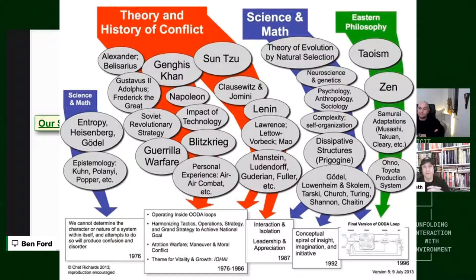We can also see on the right here where the final version of Boyd's drawing of the OODA loop — which is also my background on the slides — appears, and we can see that this took a long time. When was Boyd doing his big briefings to generals? That was all in the late seventies and the early eighties.